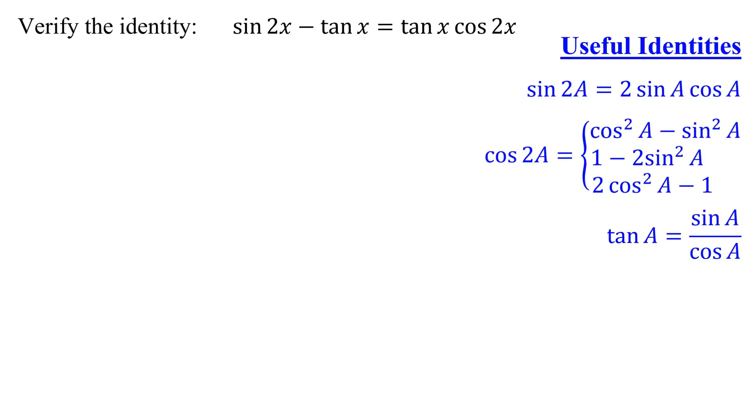And here are a few useful identities. The double angle identity for the sine function only has one version, but the double angle identity for the cosine function has three separate equivalent versions.